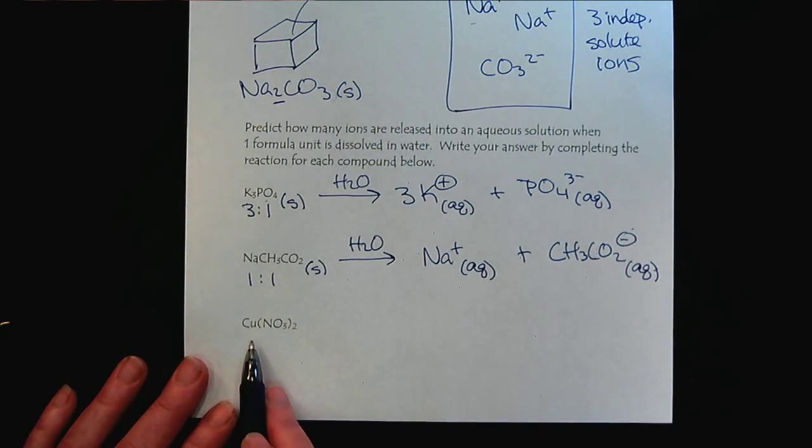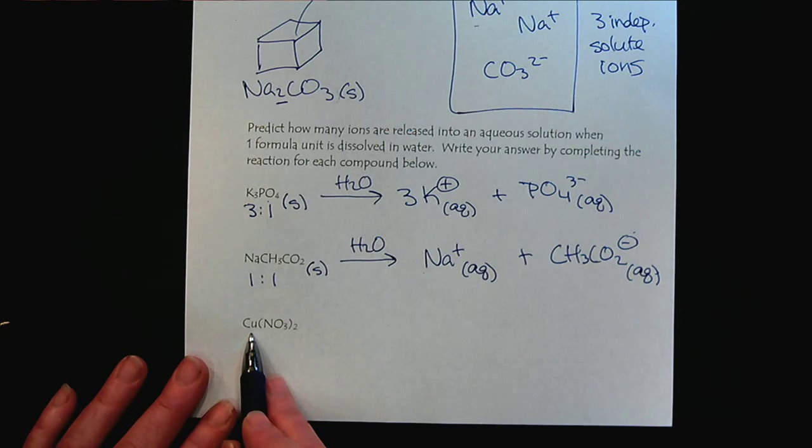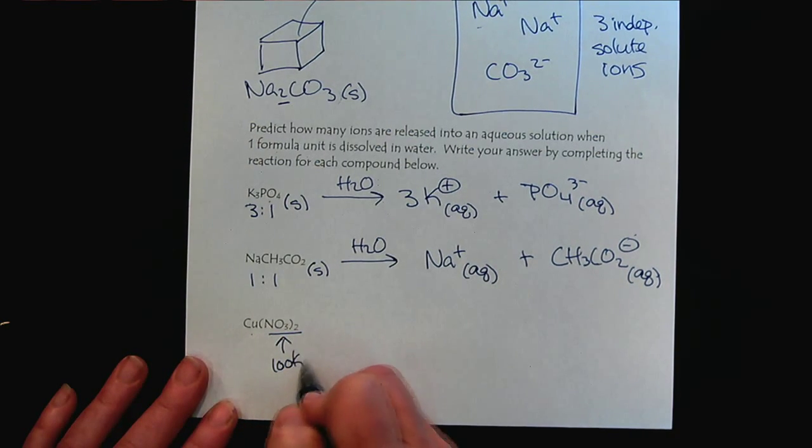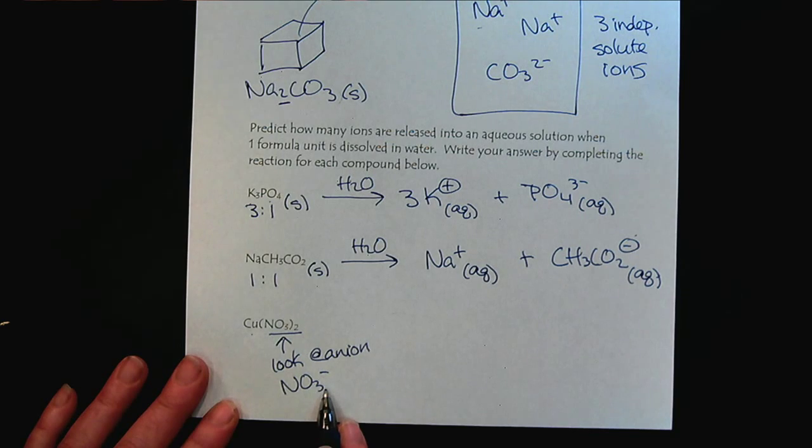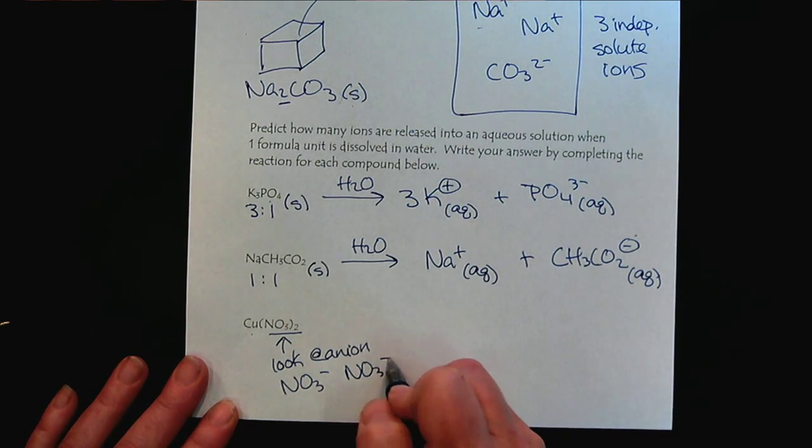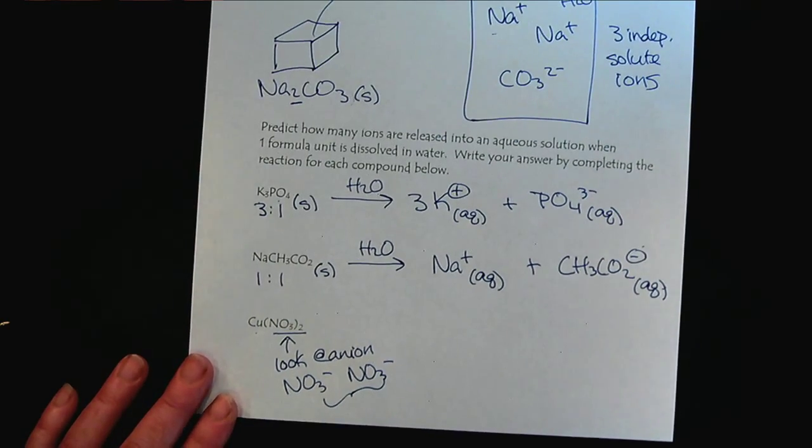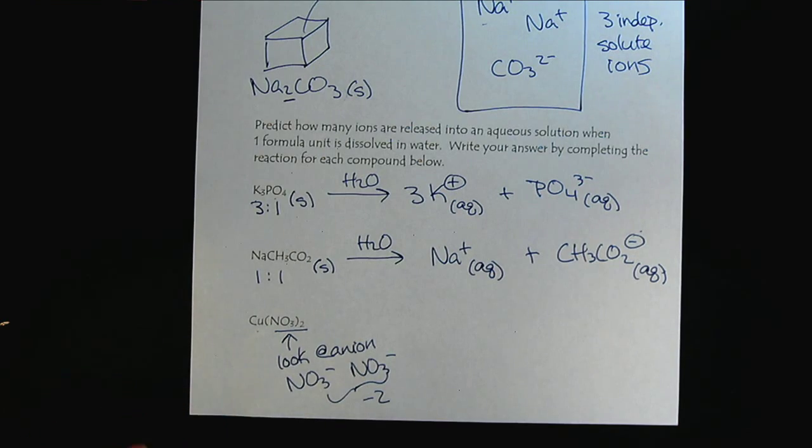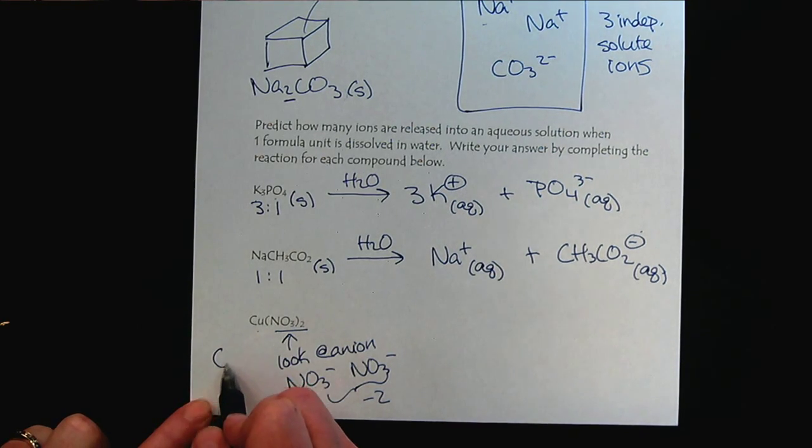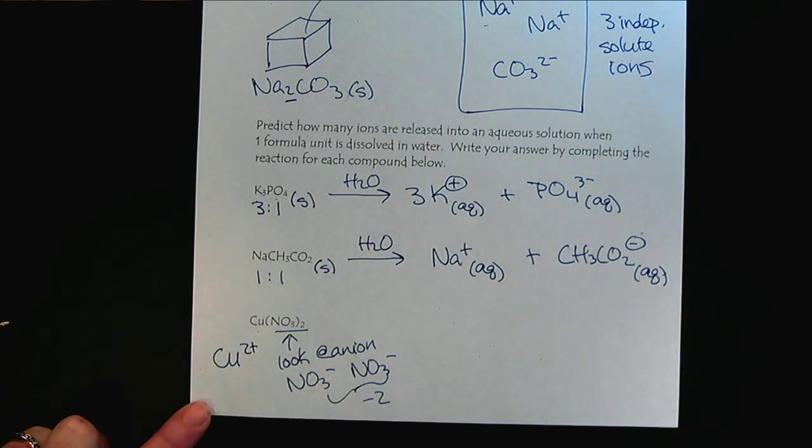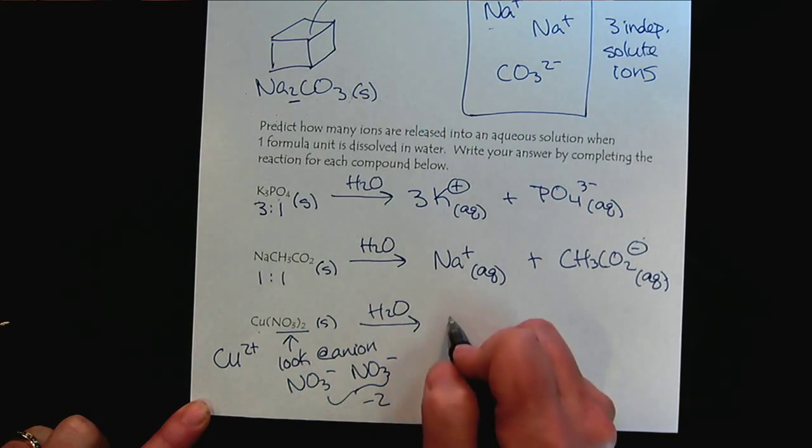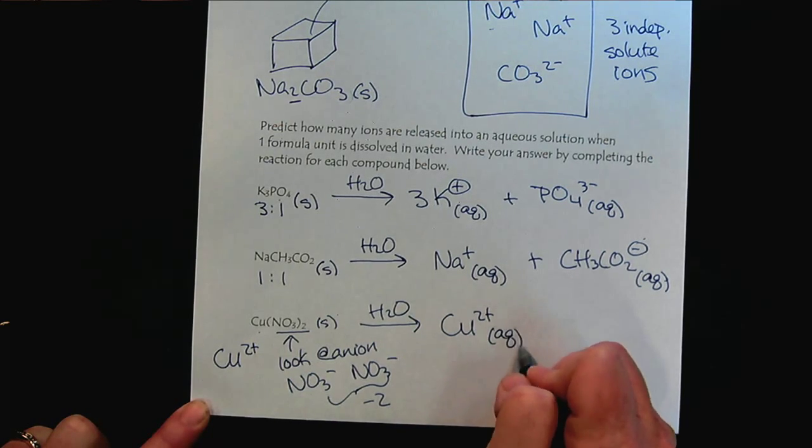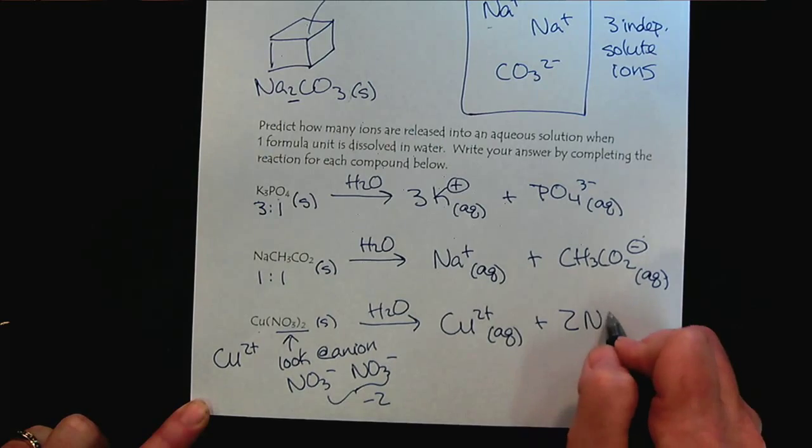And then, last but not least, here we have a compound and this is a good one. Here we have copper. What is the form of copper here? We have to look at the anion. So, we know that this anion is nitrate with a minus one. And we see that we have two of them. So, the net anionic charge is minus two. So, to create the neutral salt, we recognize that copper must be plus two. So, when we add this solid to water, we will have copper two plus and two nitrate ions.